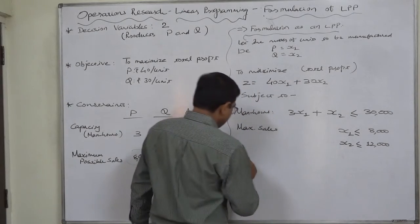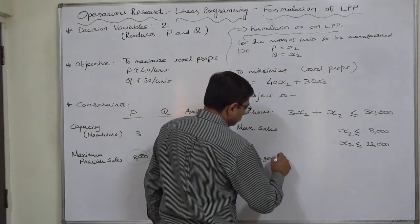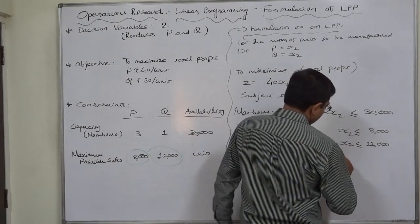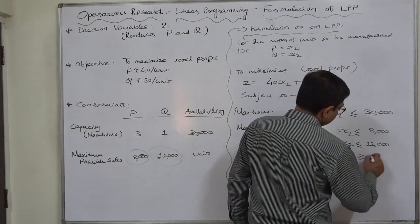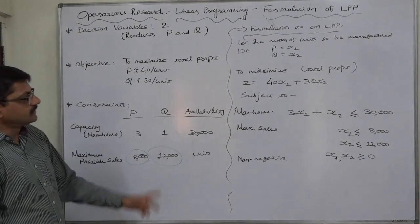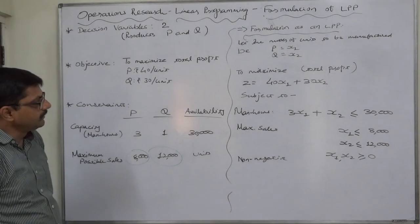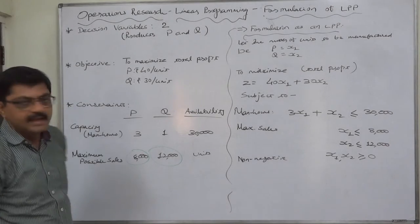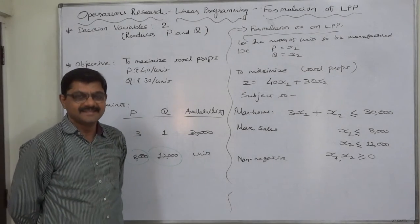And the last thing is non-negativity: X₁ and X₂ both are number of units that can never be negative. So this is the formulation of the managerial problem as a linear programming problem. That's it, thank you.